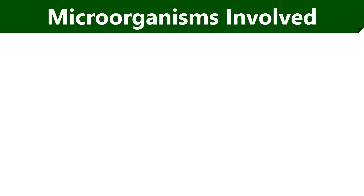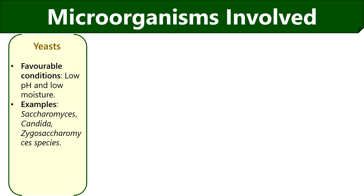Now we will discuss the common microorganisms involved in food spoilage and how they degrade food material. Yeast are unicellular fungi that cause food fermentation. They require low pH and moisture to cause food spoilage. True yeast convert sugar into alcohol and carbon dioxide, whereas false yeast grow on the food surface as a dry film.